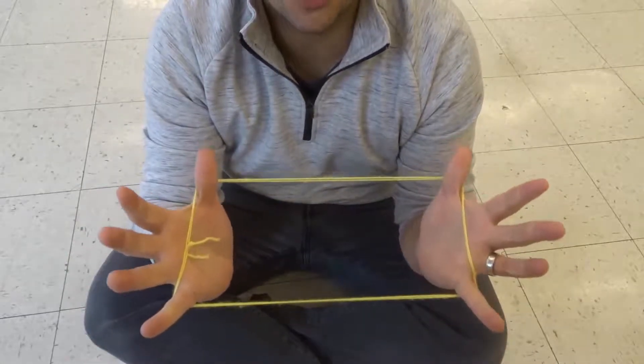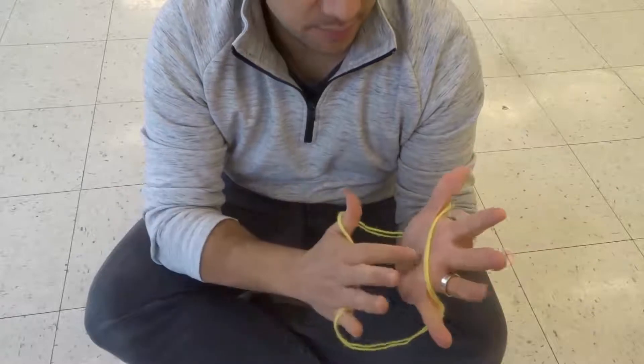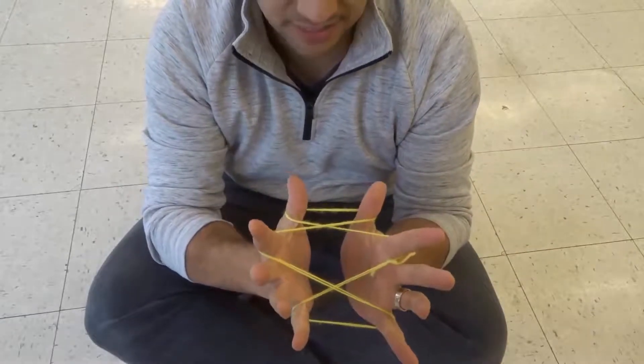You're going to start off like this with the string around your thumb and pinky on either hand, and you're going to pick up the palm strings with your index fingers just like that.